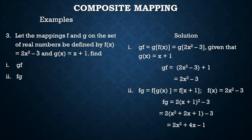The third example on composite mapping: let f(x) = 2x² − 3 and g(x) = x + 1. First, find g of f. We write g(f(x)): since f(x) = 2x² − 3, we substitute into g(x) = x + 1, giving 2x² − 3 + 1 = 2x² − 2.